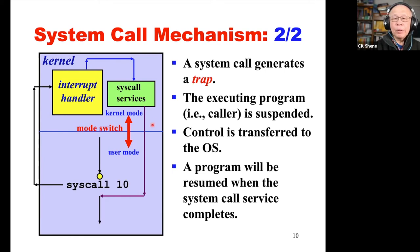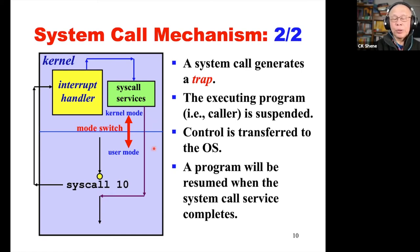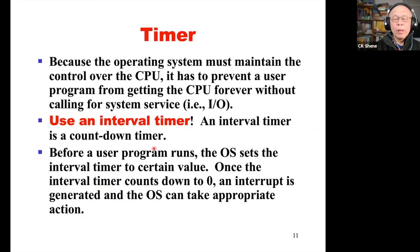Always remember there is a mode switch when an interrupt occurs going from user mode into kernel mode. After serving an interrupt, before getting control back to a suspended process, we have a mode switch going from kernel back to user mode. That ends our discussion of interrupt and trap.